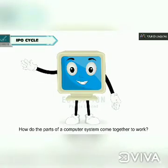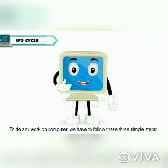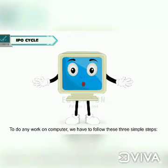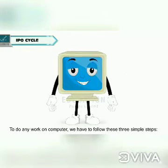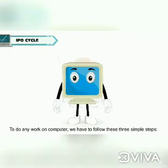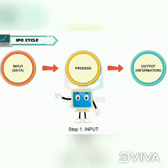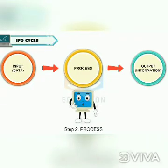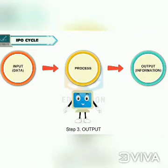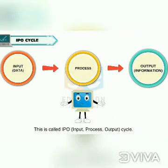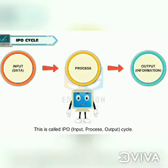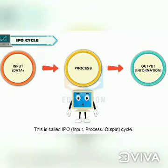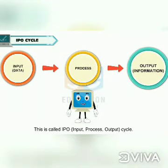How do the parts of a computer system come together to work? To do any work on the computer, we follow three simple steps: Step 1 — Input, Step 2 — Process, Step 3 — Output. This is called the IPO, or Input-Process-Output Cycle.